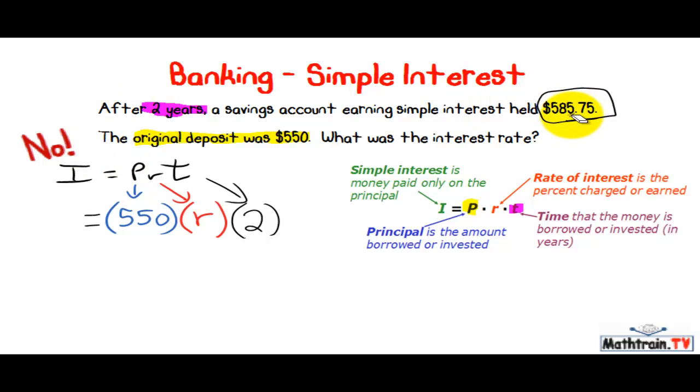Because the reason why is because if I initially put $550 into the bank, so let me draw a little bank. So here's my bank, and I put in $550 into the bank. A couple of years go by, and now all of a sudden I have $585.75 in there two years later at this rate that we don't know. What was the amount of interest that I was paid by the bank?